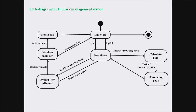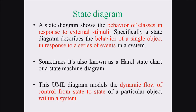This is the different state representations associated with the library management system. This state diagram represents the different actions or states associated with a particular process — we are not defining different modules or activities, just defining what steps or states are associated with the process. A state diagram shows the behavior of a class in response to external stimuli and is also known as a state chart, state transition diagram, Harel state chart, or state machine diagram.